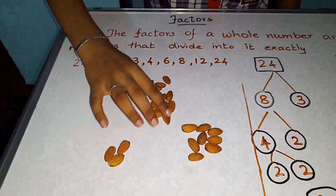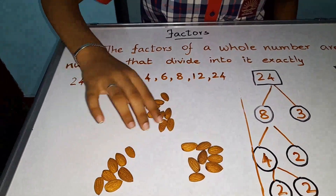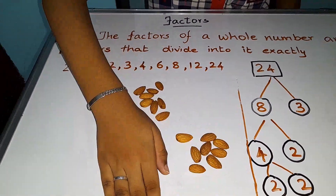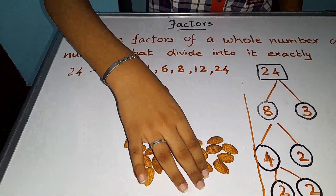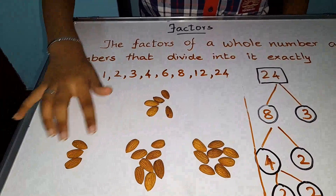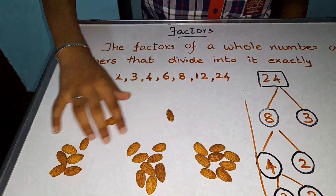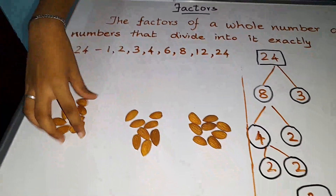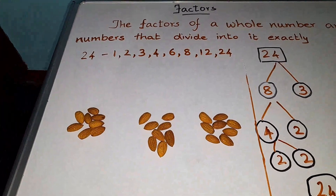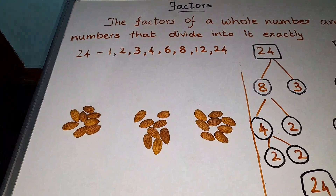Now we have to do the second group: 1, 2, 3, 4, 5, 6, 7, 8. The second group is also done. Now I am going to do the last group: 1, 2, 3, 4, 5, 6, 7, 8. Now all of these almonds are divided into 3 groups and each group consists of 8 almonds.